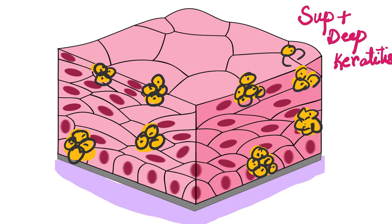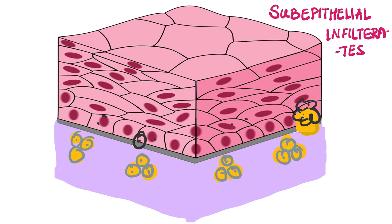As inflammation progresses from superficial to deeper keratitis, if it involves the Bowman's membrane and reaches the anterior stroma, it is called sub-epithelial infiltrates. Sub-epithelial infiltrates (SEI) are basically an aggregation of inflammatory cells below the epithelium in the anterior stroma near the Bowman's membrane. At this stage, some books also refer to this as stromal keratitis because the inflammation is now present in the stromal region.